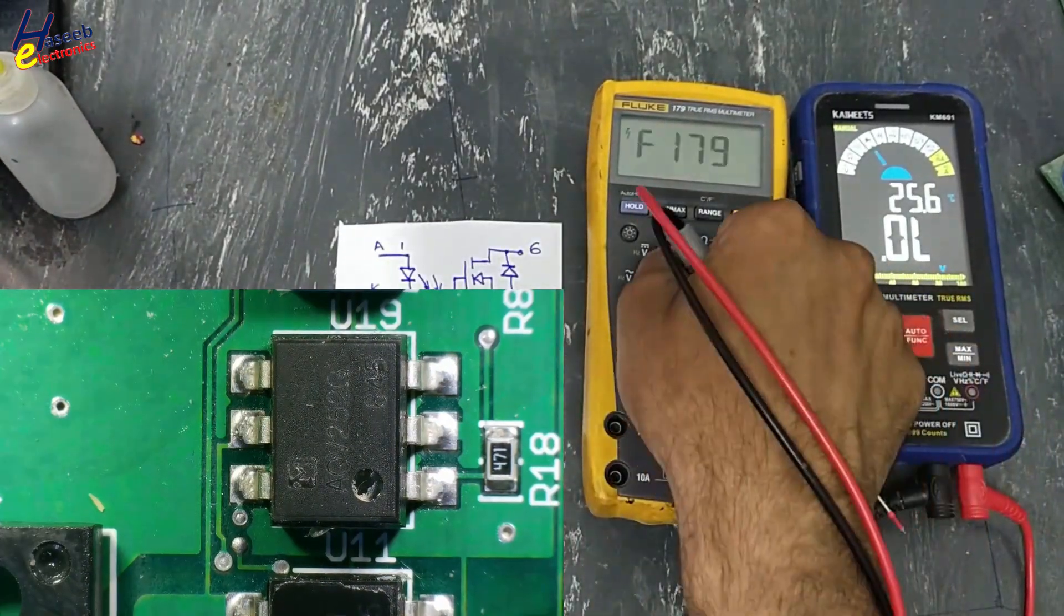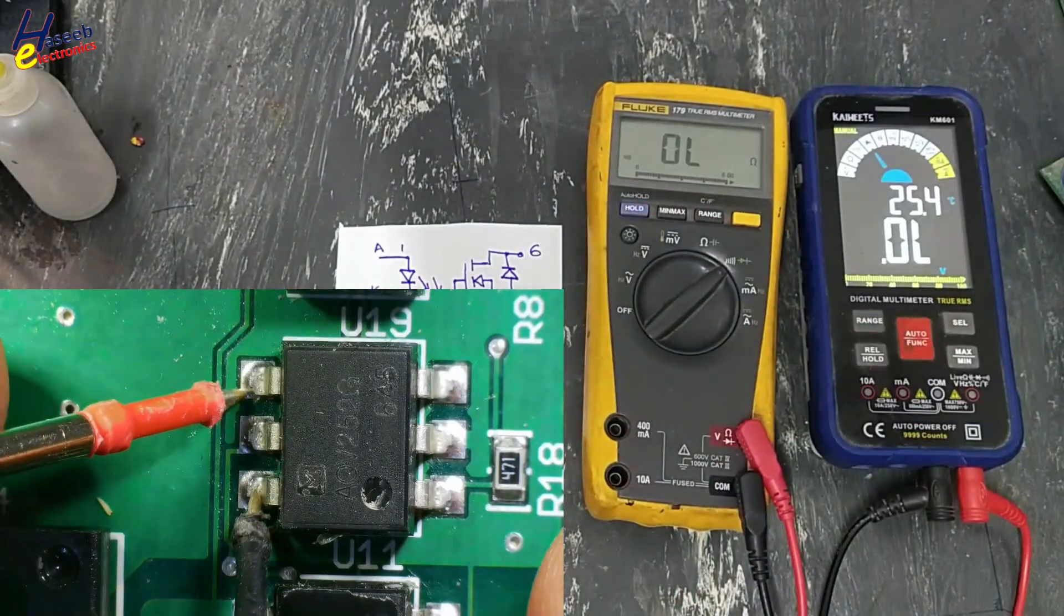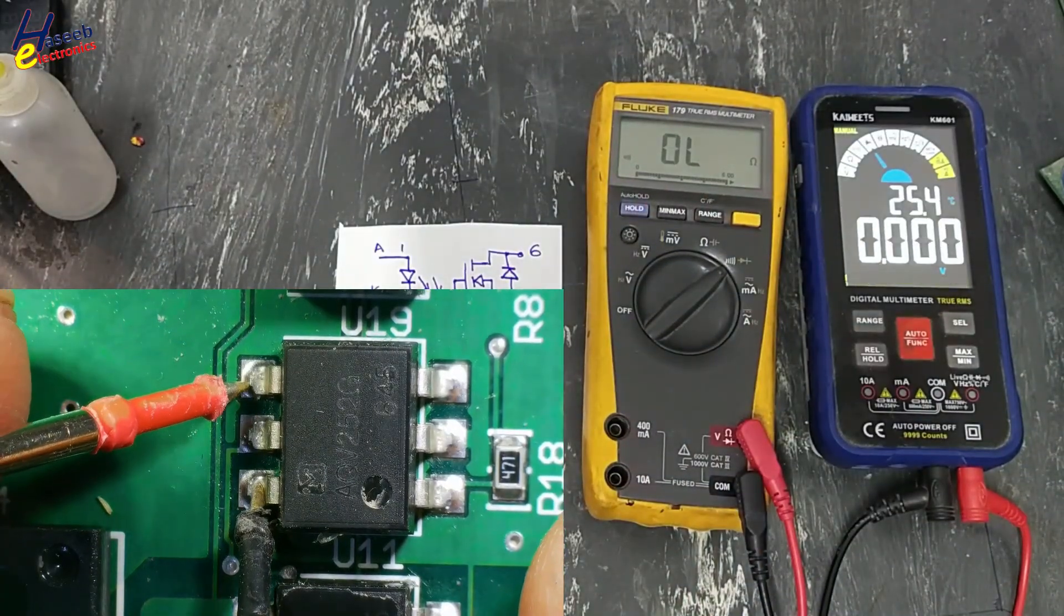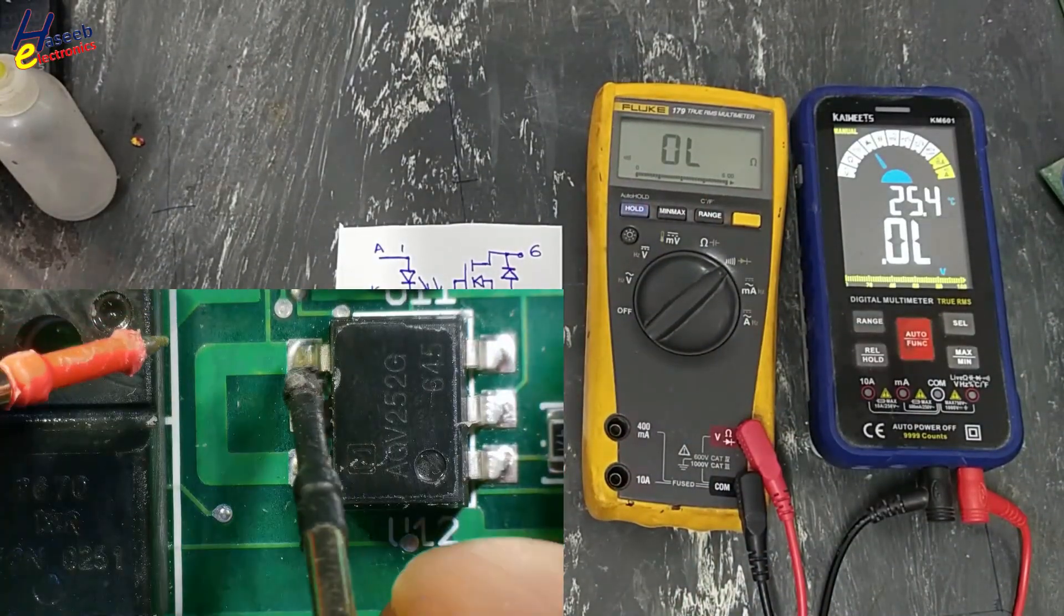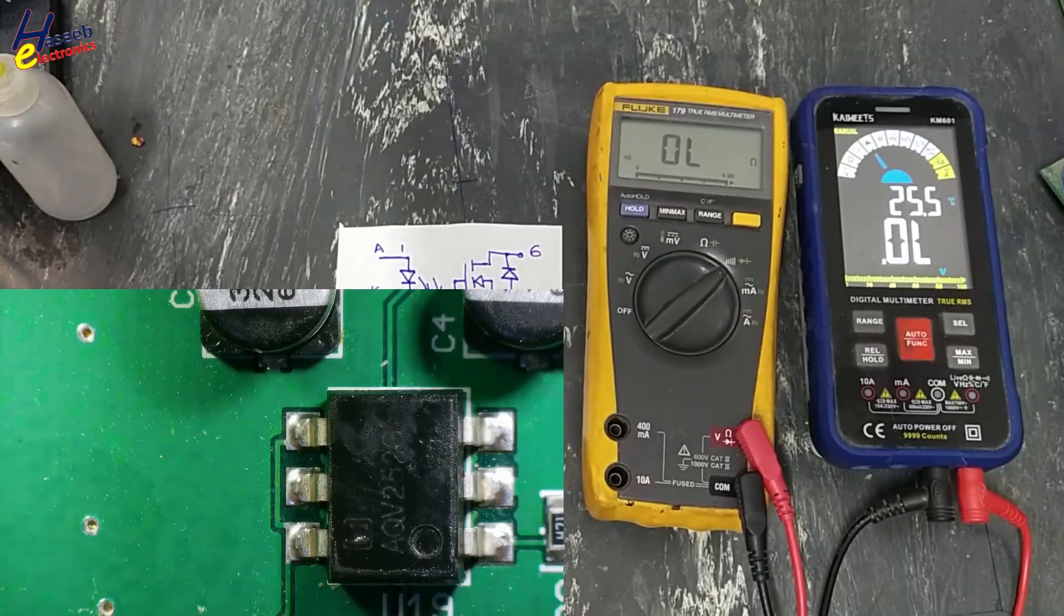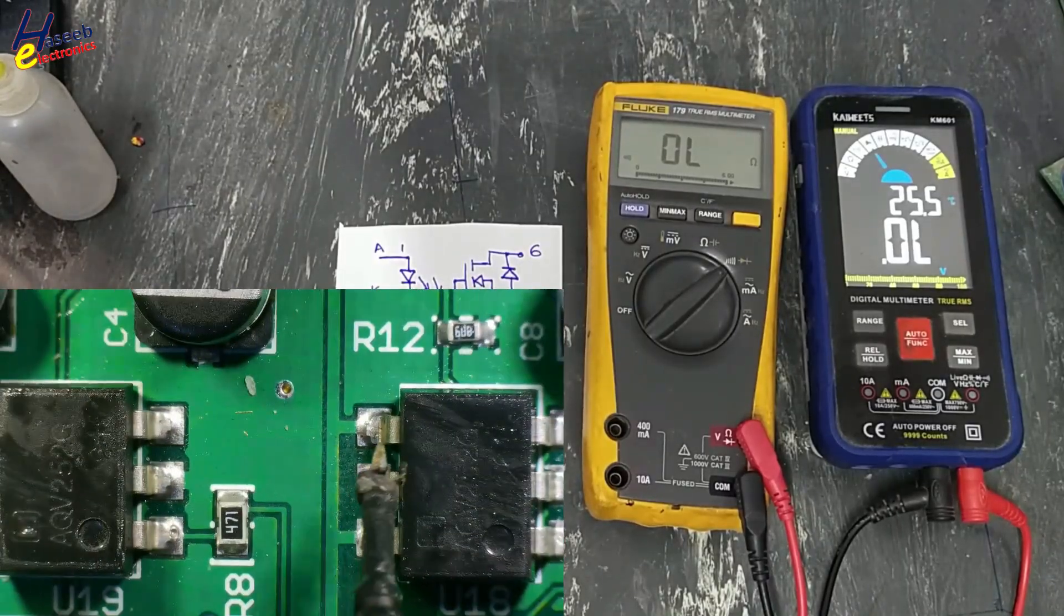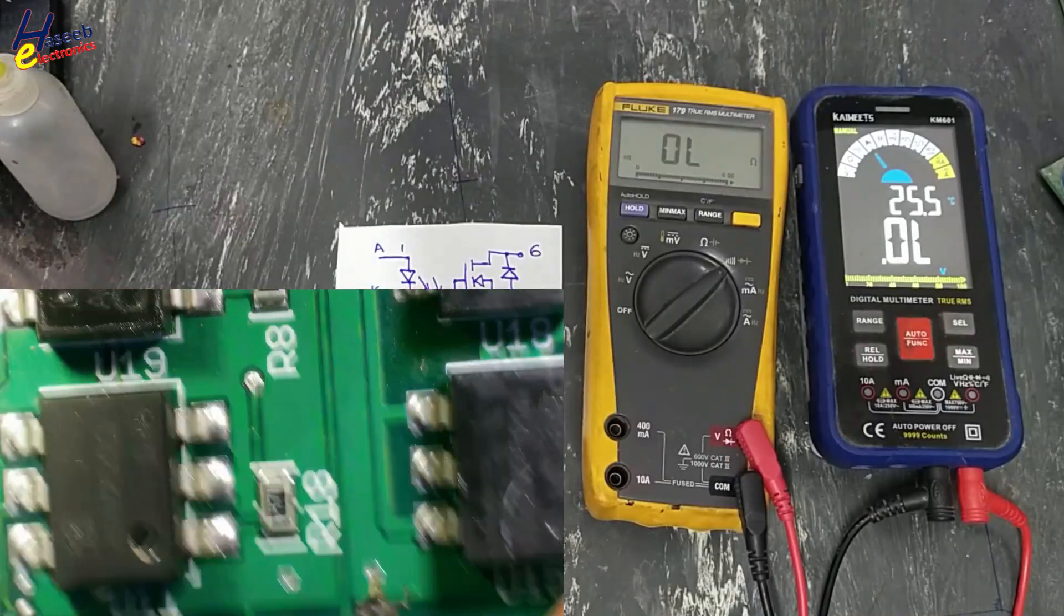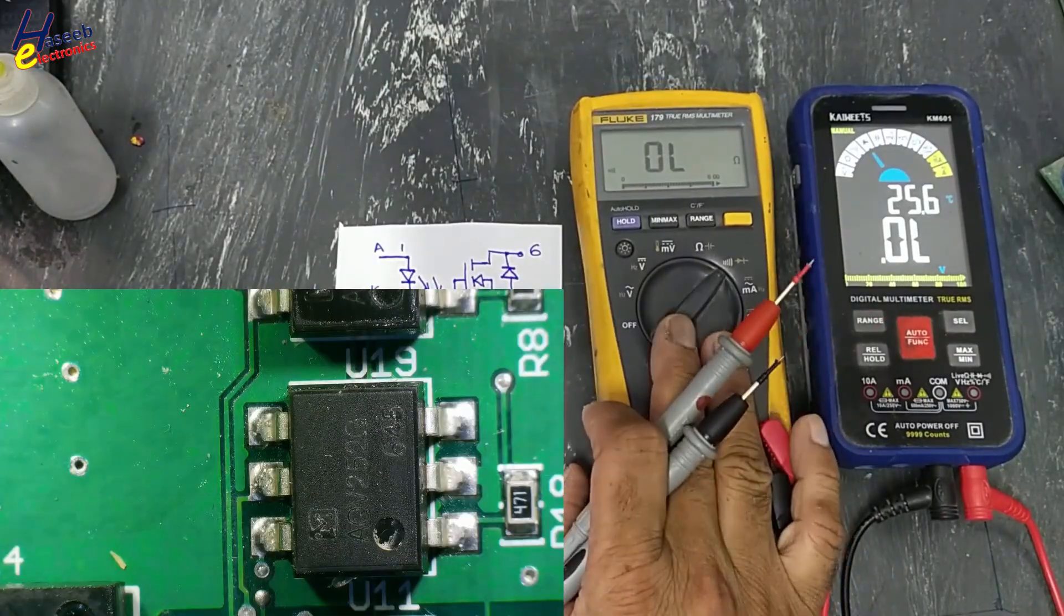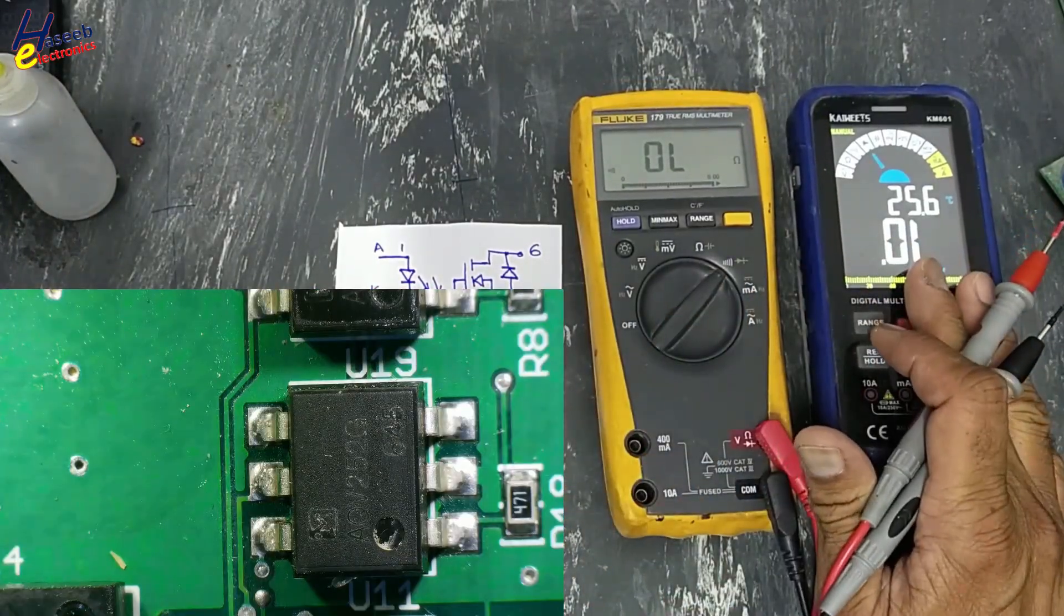Most of the time, pin number four and six are connected together. This multimeter will be used on the output side and this one on the input side.